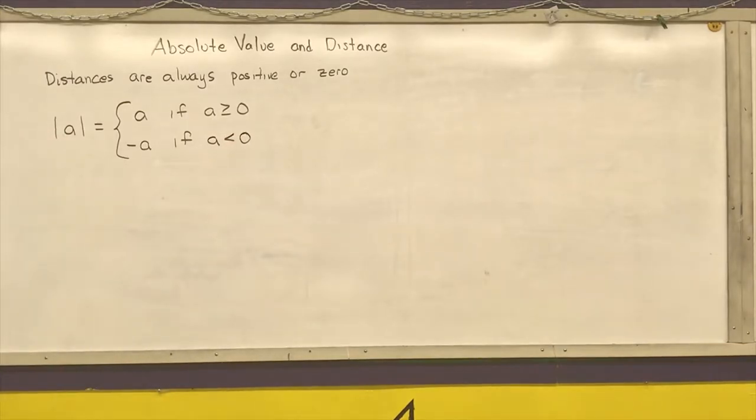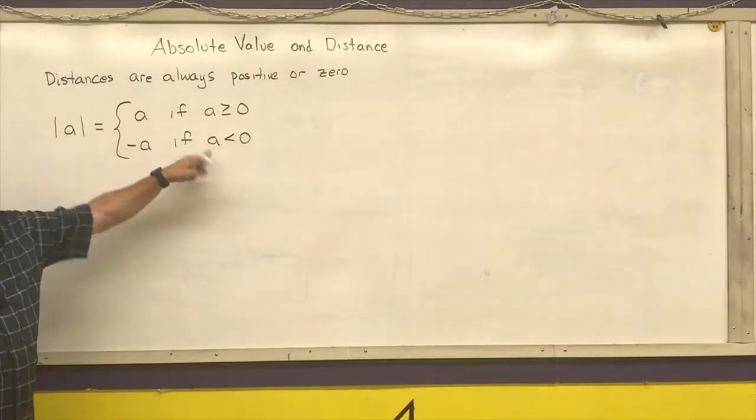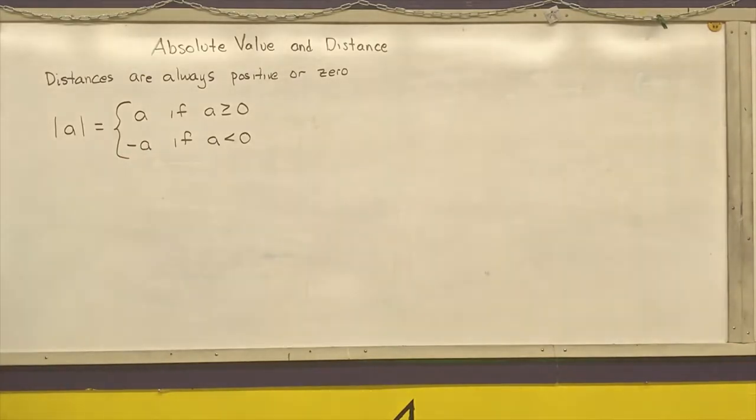Okay, so if it's a positive number or zero, I can just get rid of the absolute value symbol. And if it is a negative number, I give its opposite, which turns it into a positive number.